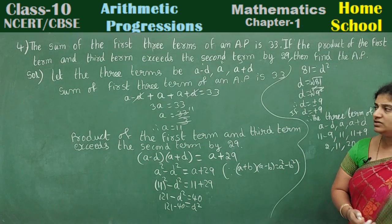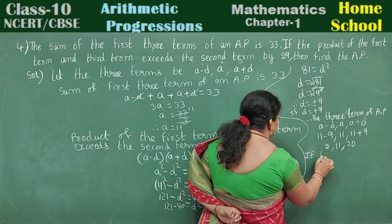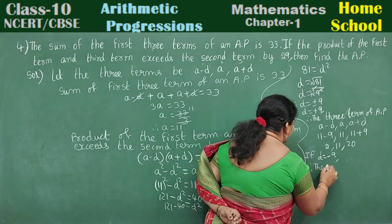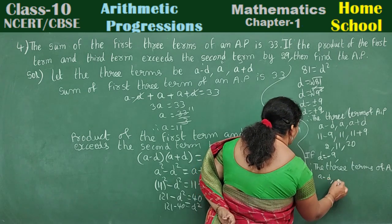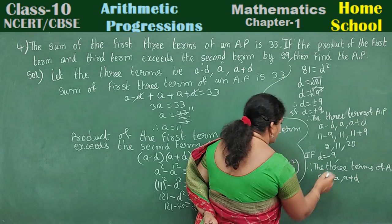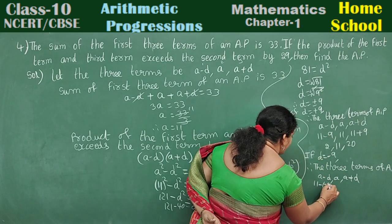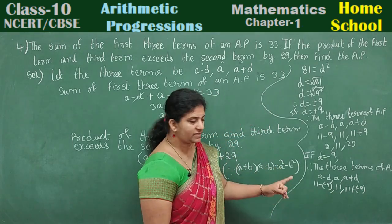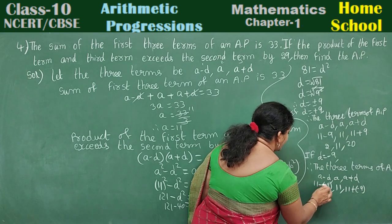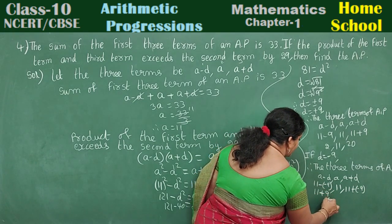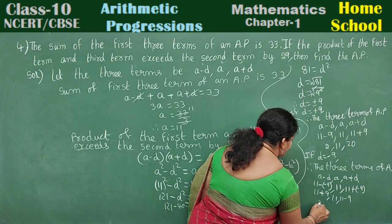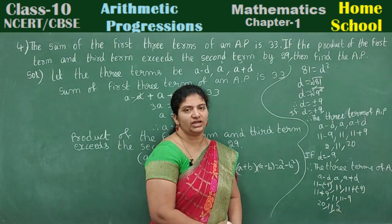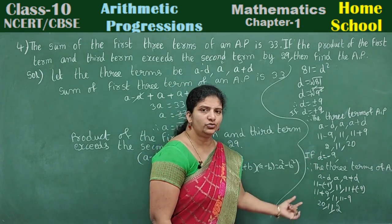Your problem is not completed — you still need two more lines. If D is equal to minus 9, therefore the three terms are A minus D, A, A plus D. Substitute D = minus 9 and A = 11: 11 minus (minus 9) = 11 plus 9 = 20, then 11, then 11 plus (minus 9) = 11 minus 9 = 2. Therefore the three terms of the AP are 20, 11, 2.